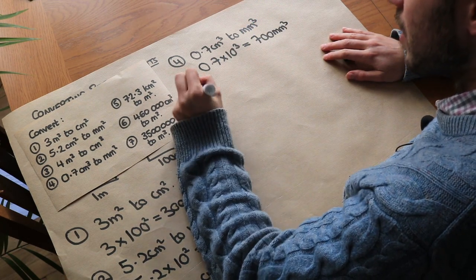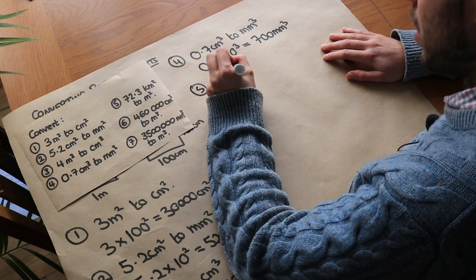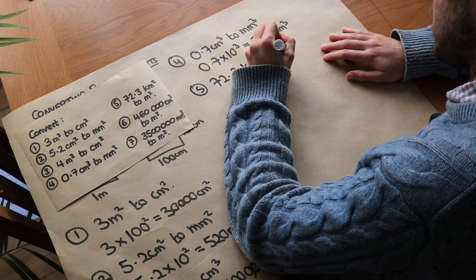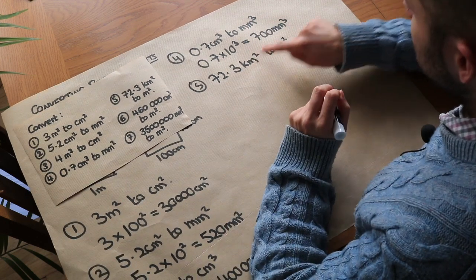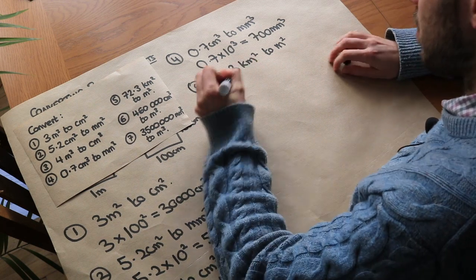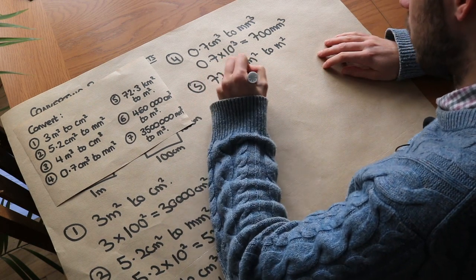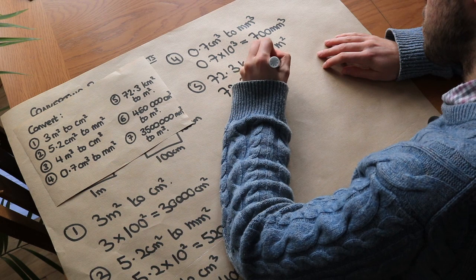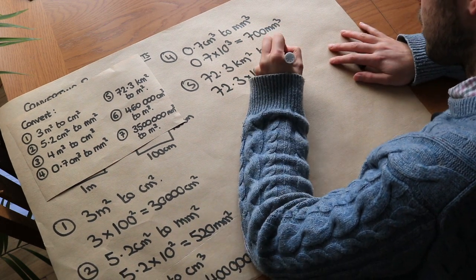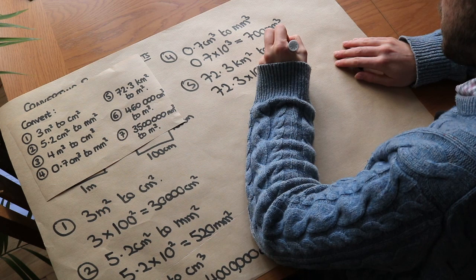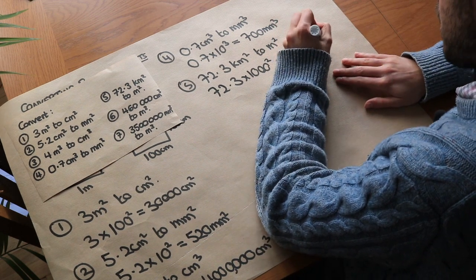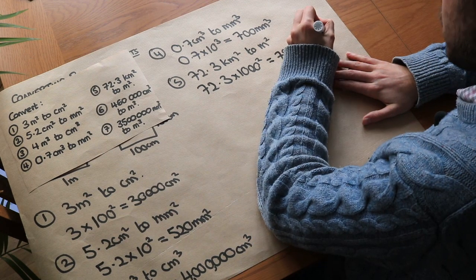Question 5: we want to convert 72.3 kilometres squared to metres squared. To get from kilometres to metres we multiply by a thousand — there are a thousand metres in a kilometre — so therefore we multiply by a thousand squared, which is the same as multiplying by a million. So it's going to be 72.3 million, which is 72 million three hundred thousand metres squared.